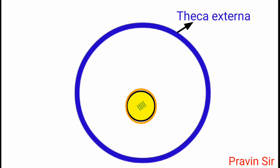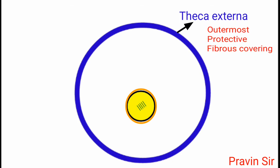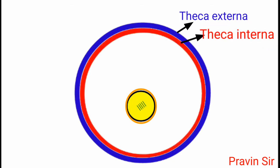This is theca externa. It is outermost protective and fibrous covering. Theca interna. It is inner to the theca externa. It produces hormone estrogen.